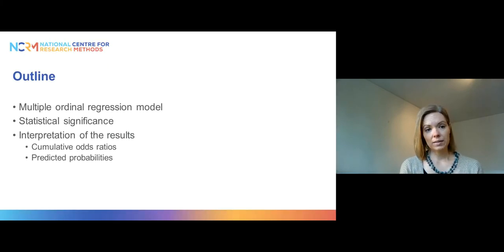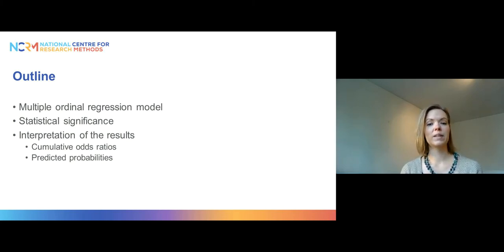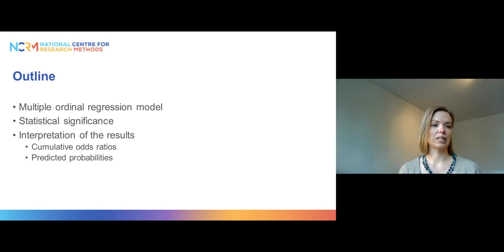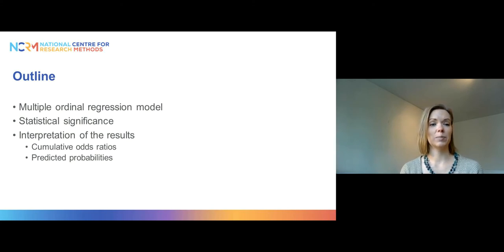Today we will talk about multiple ordinal regression models, that is an ordinal regression model where you have more than one explanatory variable. We will look at statistical significance and how to determine that in such a model, and then we will look at interpretation of the results, including cumulative odds ratios as well as predicted probabilities. There is a third video of the series which talks about the proportional odds assumption.